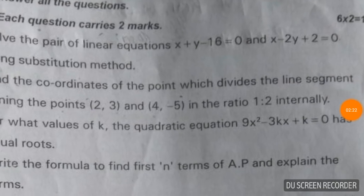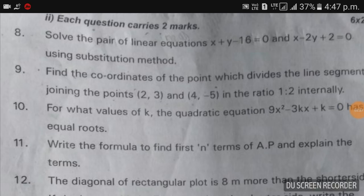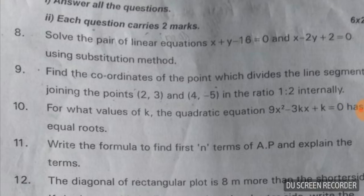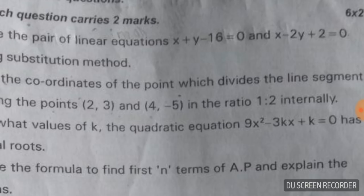Solve the pair of linear equations: x + 5y - 16 = 0 and x - 2y + 2 = 0 using the substitution method. From the second equation, x = 2y - 2. Substitute this into the first equation to get the value of y, then substitute y back to get the value of x.